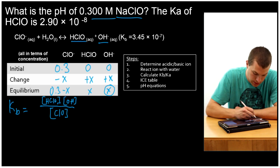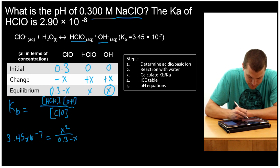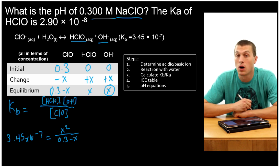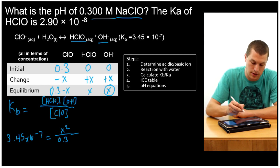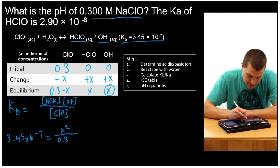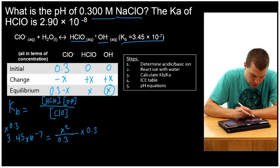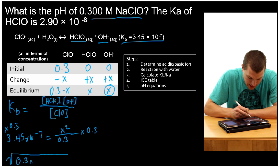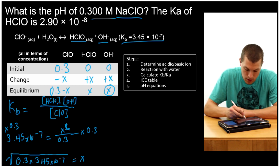Now let's plug in some values. Our Kb we know is 3.45 times 10 to the minus 7, and that's going to be equal to X times X, or X squared, over 0.3 minus X. Now here is where we remember that if we have a small equilibrium constant, we can drop that subtracted X, and that really saves us a lot of time. The only reason we can do that is because our Kb is so small. So anytime that's less than, say, 10 to the minus 3, we can drop it. We have 10 to the minus 7, plenty small to drop it. So now we solve for X by multiplying both sides by 0.3 and then by taking the square root. So what we get is the square root of 0.3 times 3.45 times 10 to the minus 7 is equal to our X. So we got rid of that square by taking the square root.